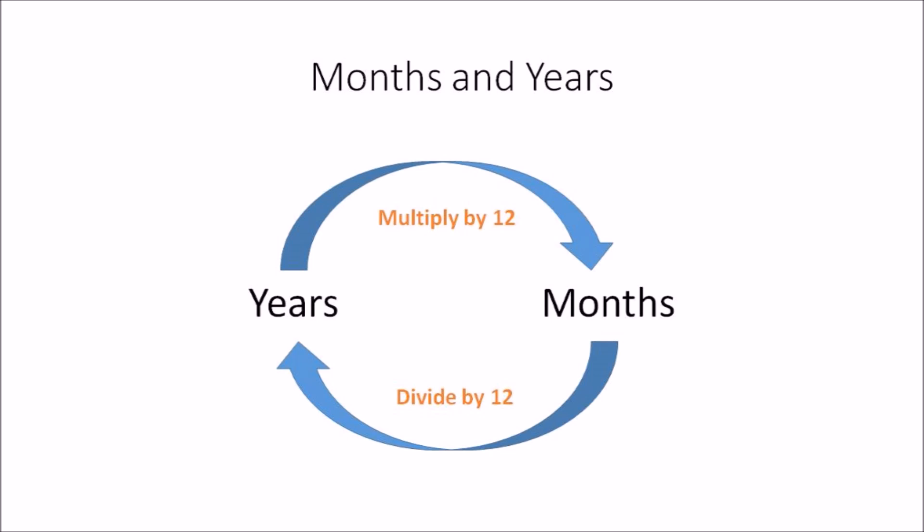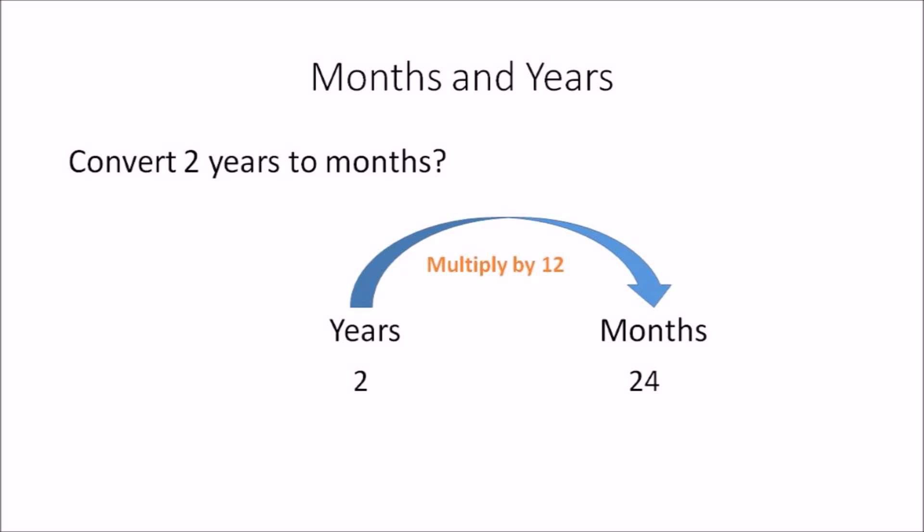In order to understand better, let's go through some examples. Convert 2 years to months. In this example you need to convert years to months, so you need to multiply the amount you have in years by 12. So 2 years multiplied by 12 gives you 24 months.